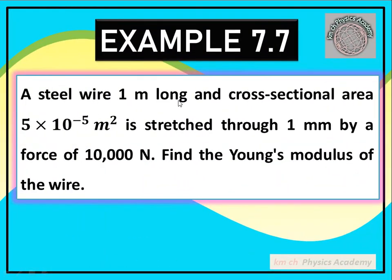A steel wire is 1 meter long, with cross-sectional area 5 × 10⁻⁵ meter square. It is stretched through 1 millimeter by a force of 10,000 newton. That is, applying a force of 10,000 newton increases its length by 1 millimeter. We have to find the Young's modulus of the wire.